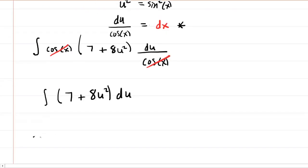At this point, it's just basic integration. The integral of a constant with respect to the variable is just the constant multiplied by the variable. For the 8u² term, we'll use the power rule: add 1 to the power and divide by that new power. Don't forget your constant of integration.